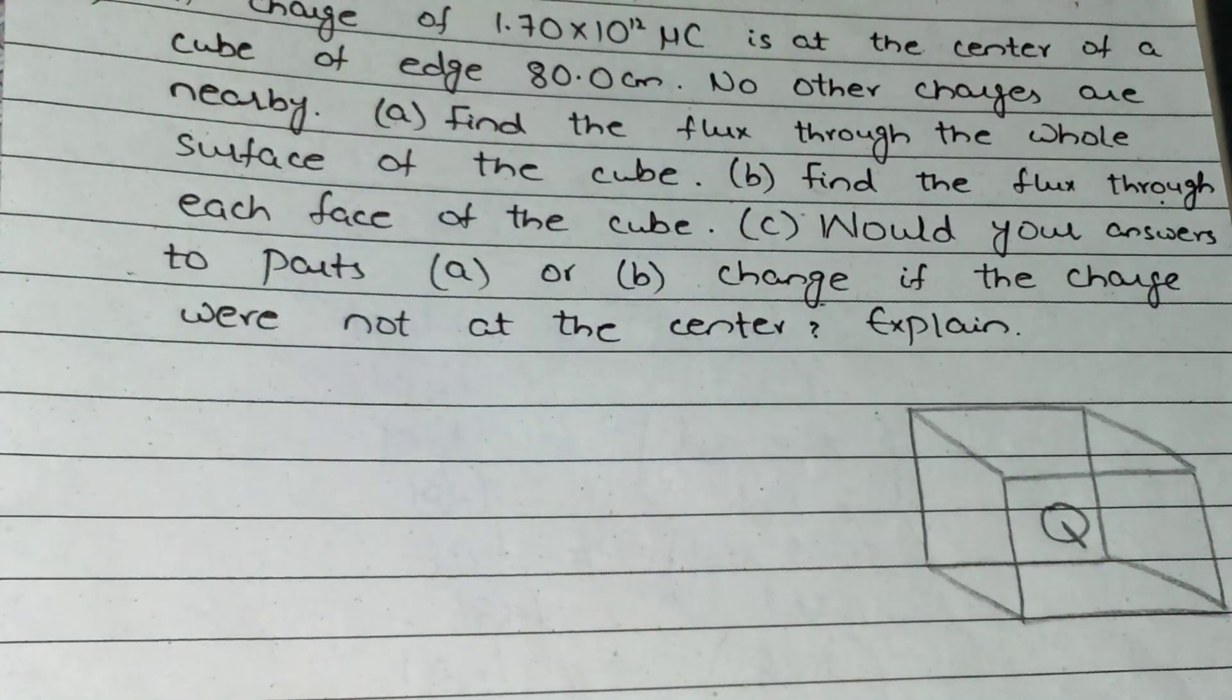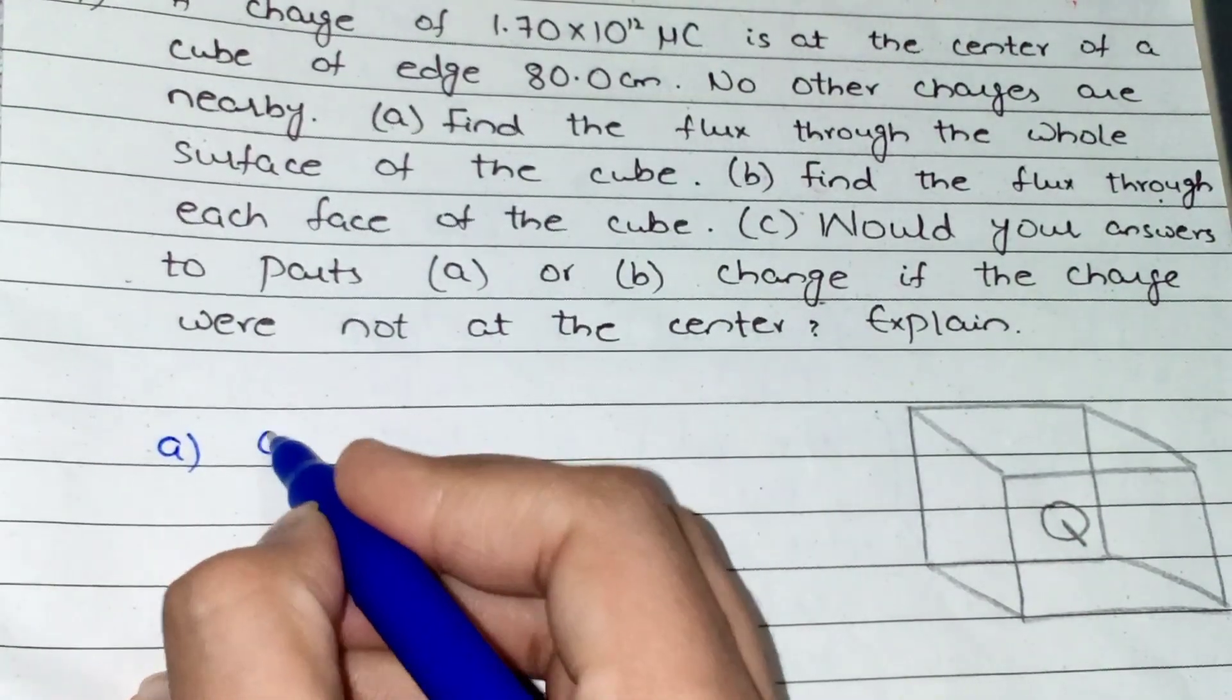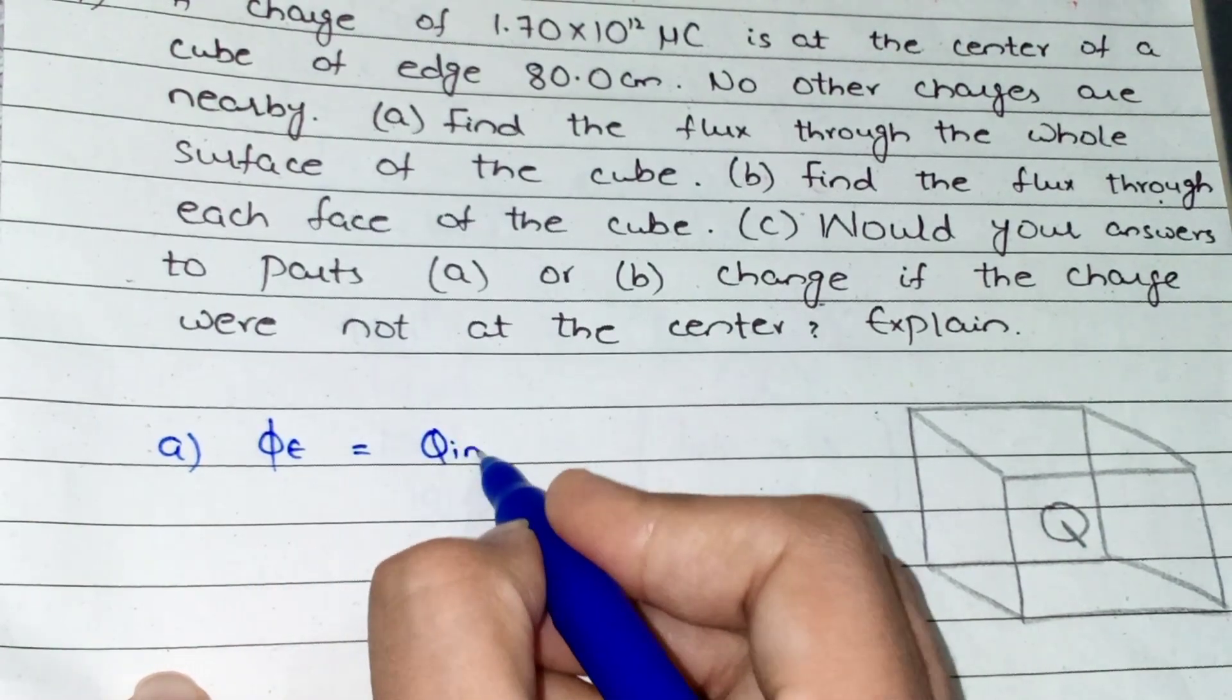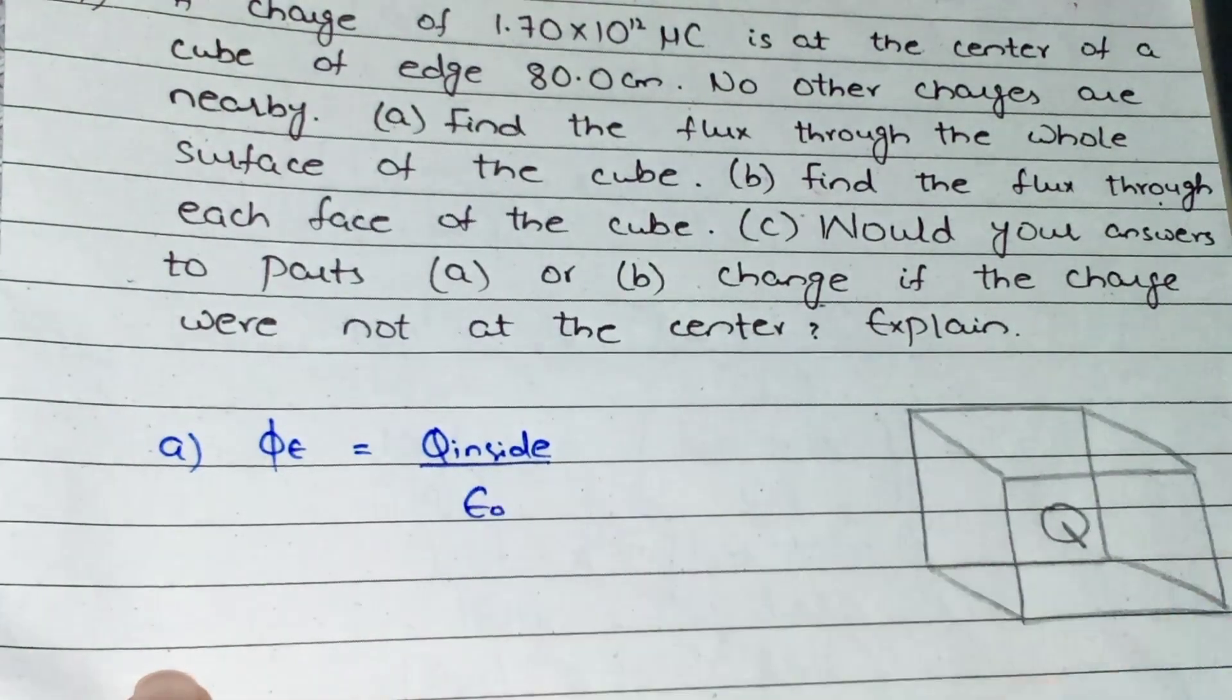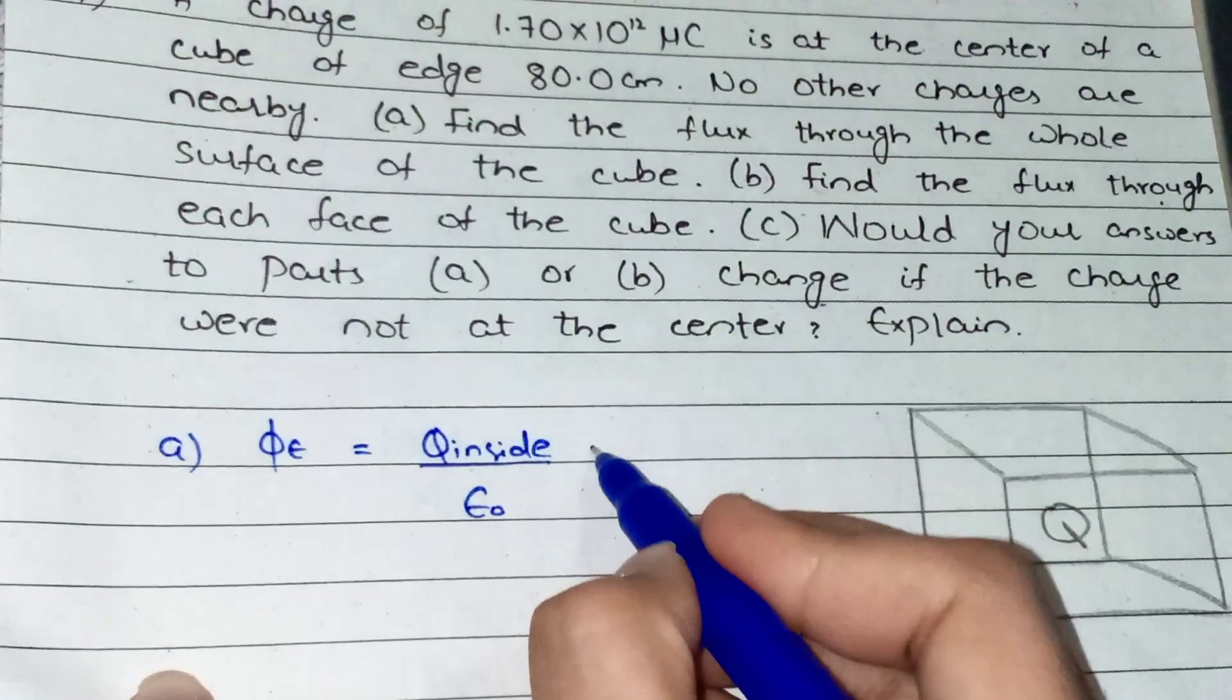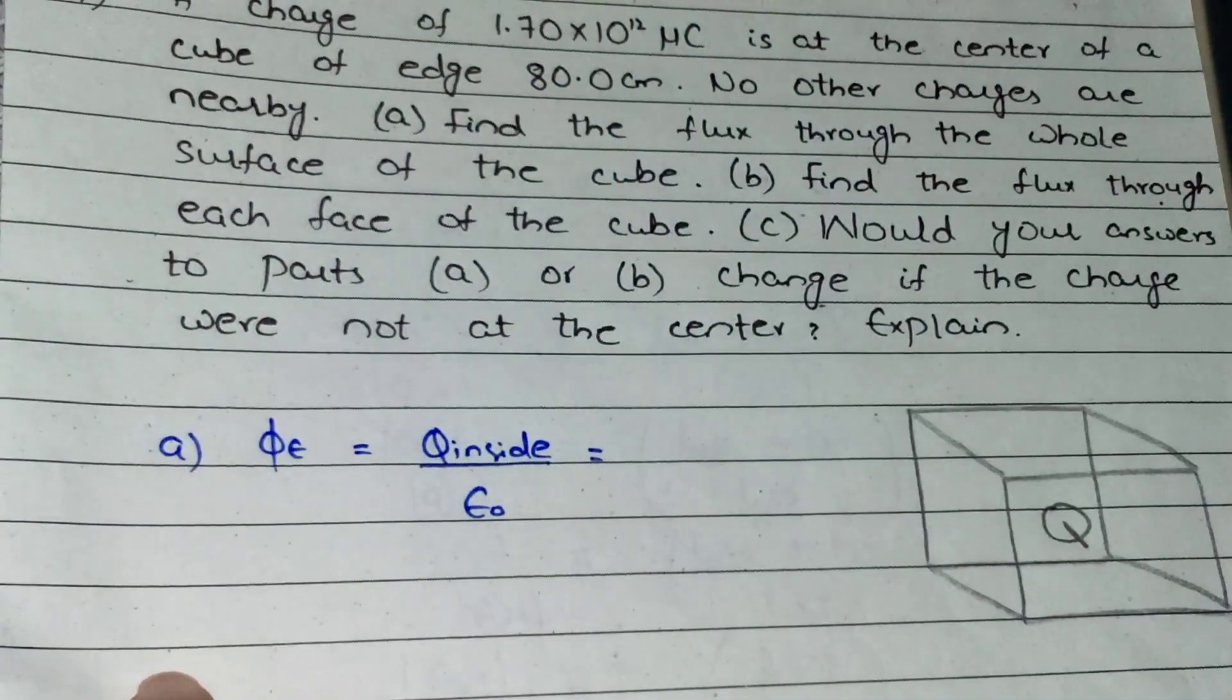Now, the formula to find the overall flux for part A is: phi E equals Q inside divided by epsilon, where epsilon is a constant. At this point, I have only one charge here with a given magnitude, but it is given in micro coulombs.